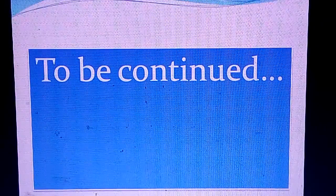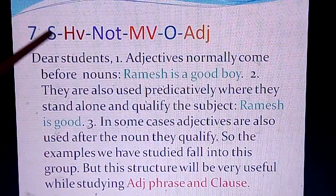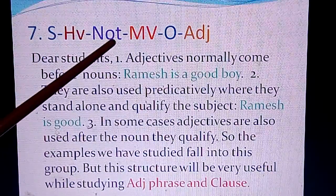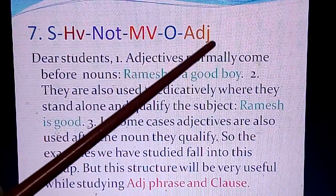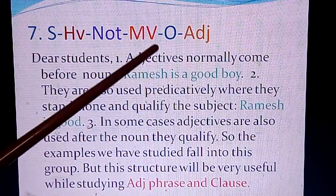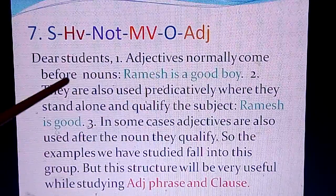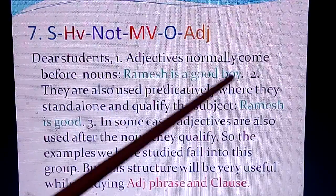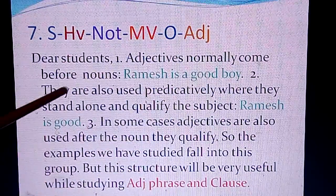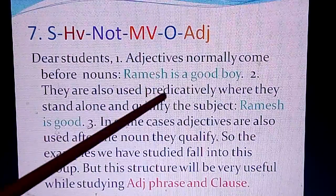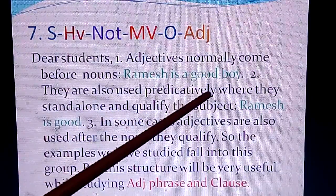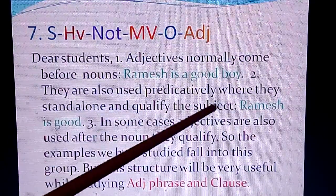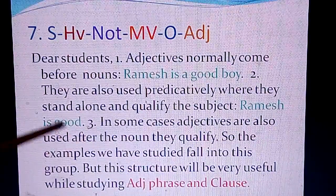Continuing with the seventh structure: subject, helping verb, main verb, object, and adjective. Adjectives normally come before nouns — for example, 'Ramesh is a good boy,' where 'boy' is the noun and 'good' is the adjective. Adjectives are also used predicatively, where they stand alone and qualify the subject, as in 'Ramesh is good.'